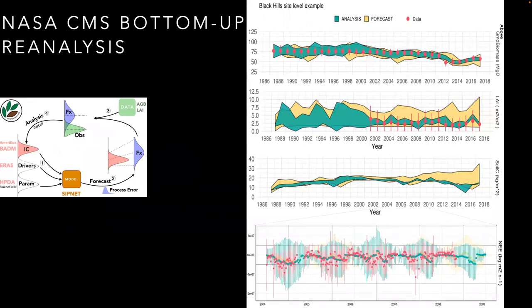This figure shows an example site level simulation, where the forecast is in yellow, the data in red, and the data simulation in green. Through data simulation, we're able to not just constrain the pools we measure, such as AGB, but also those that are partially observed, such as LAI, and those that are unobserved, such as soil carbon and fast timescale fluxes. The observed flux data shown here was used just for validation, not as part of the assimilation.